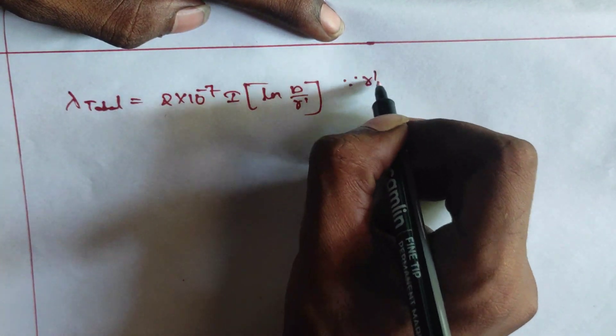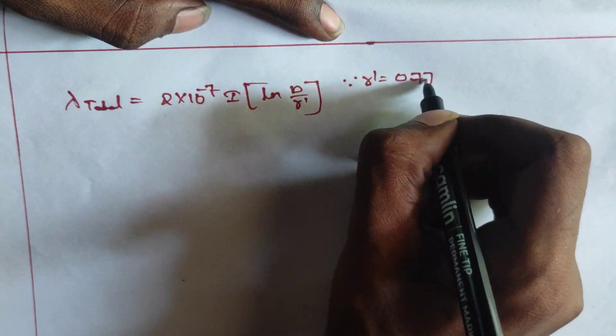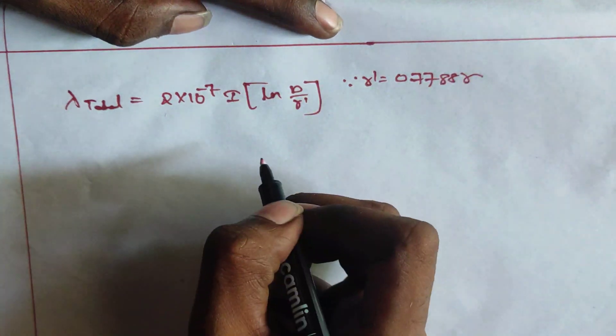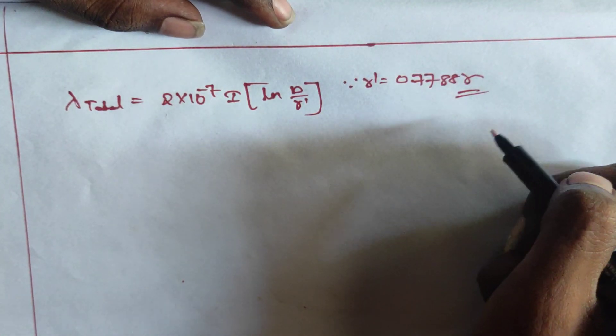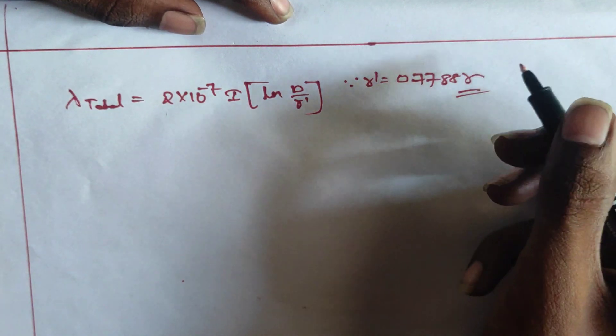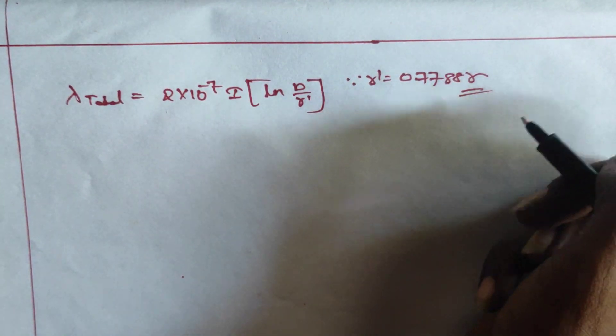where R dash is equals to 0.7788R. This is the expression that we have got in our recent video, in our previous video.